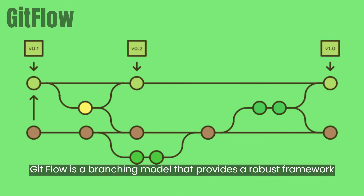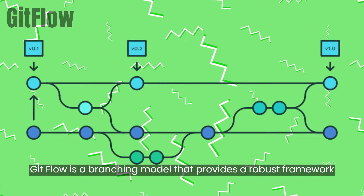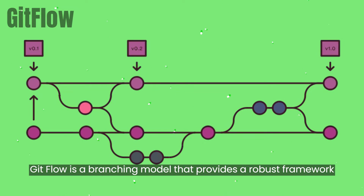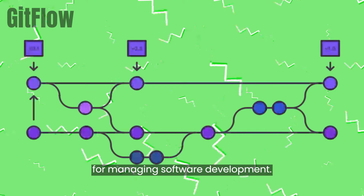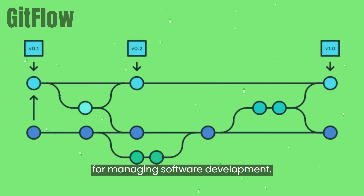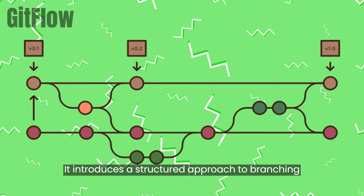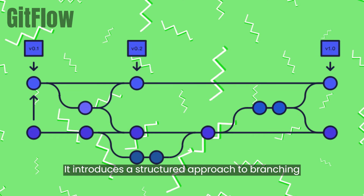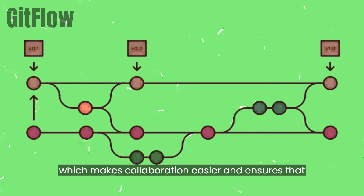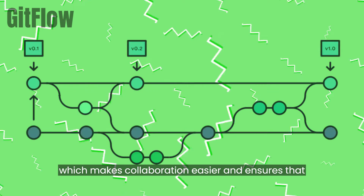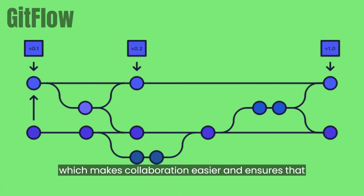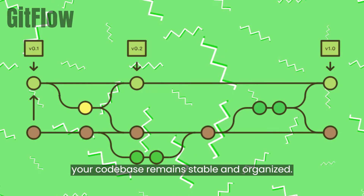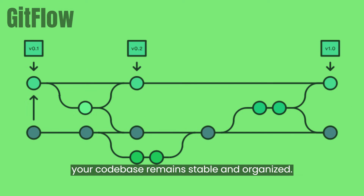GitFlow is a branching model that provides a robust framework for managing software development. It introduces a structured approach to branching, which makes collaboration easier and ensures that your codebase remains stable and organized.